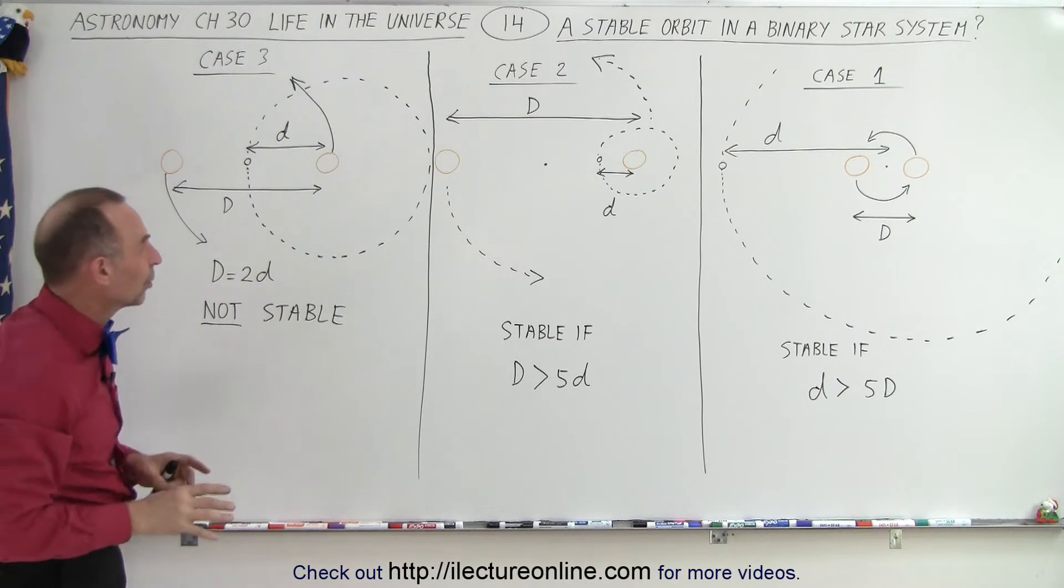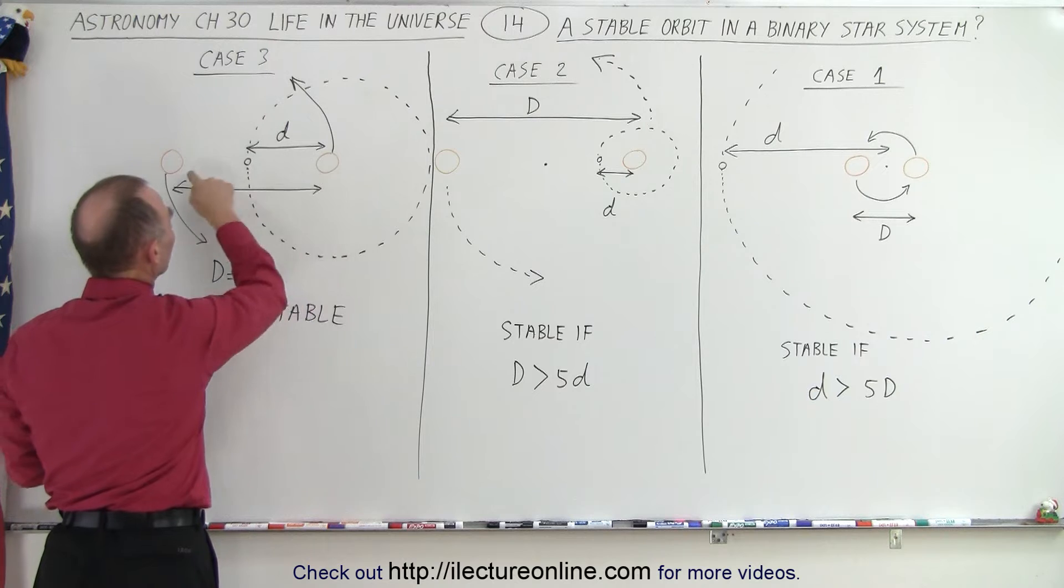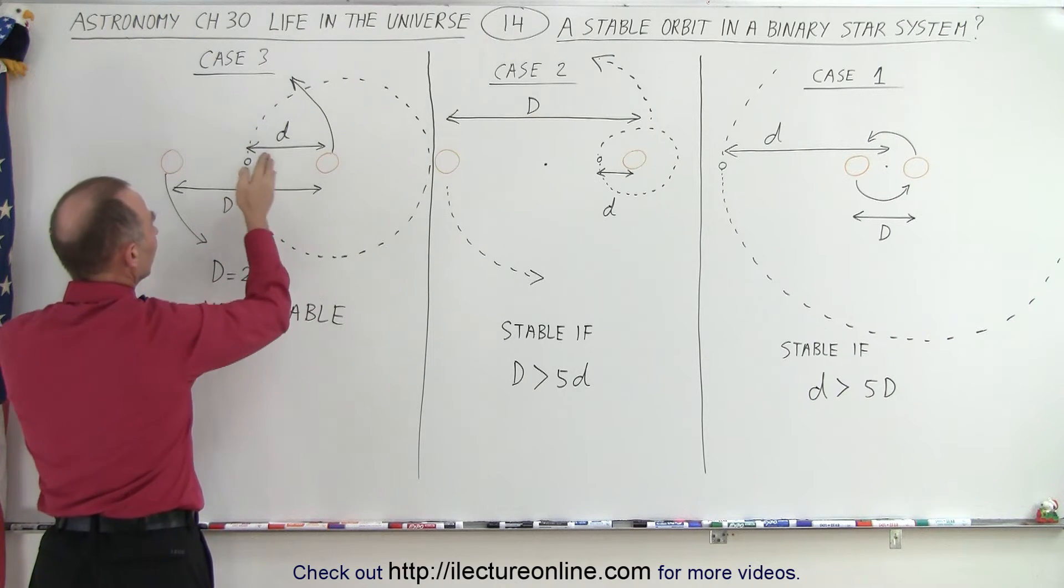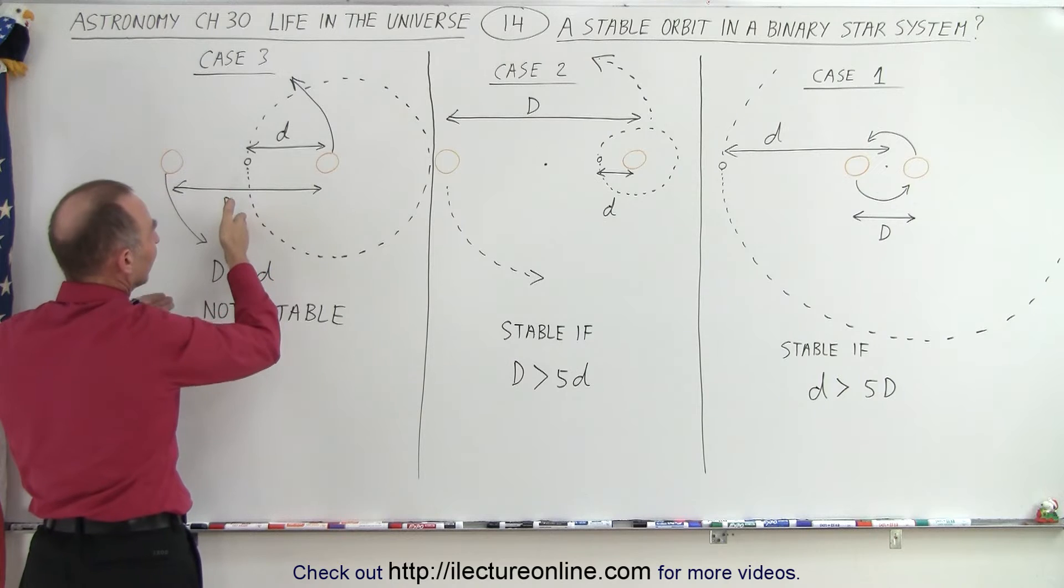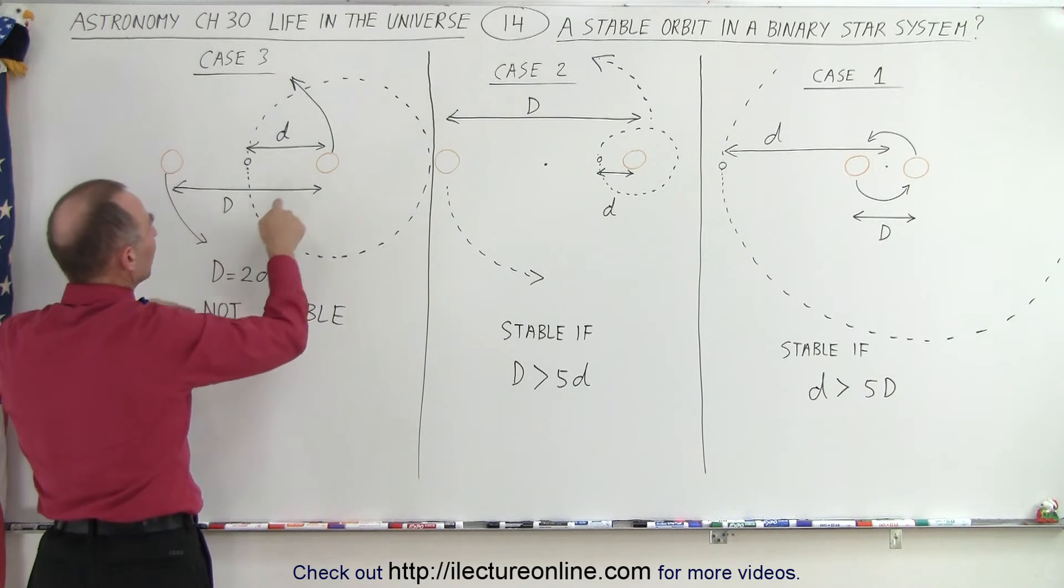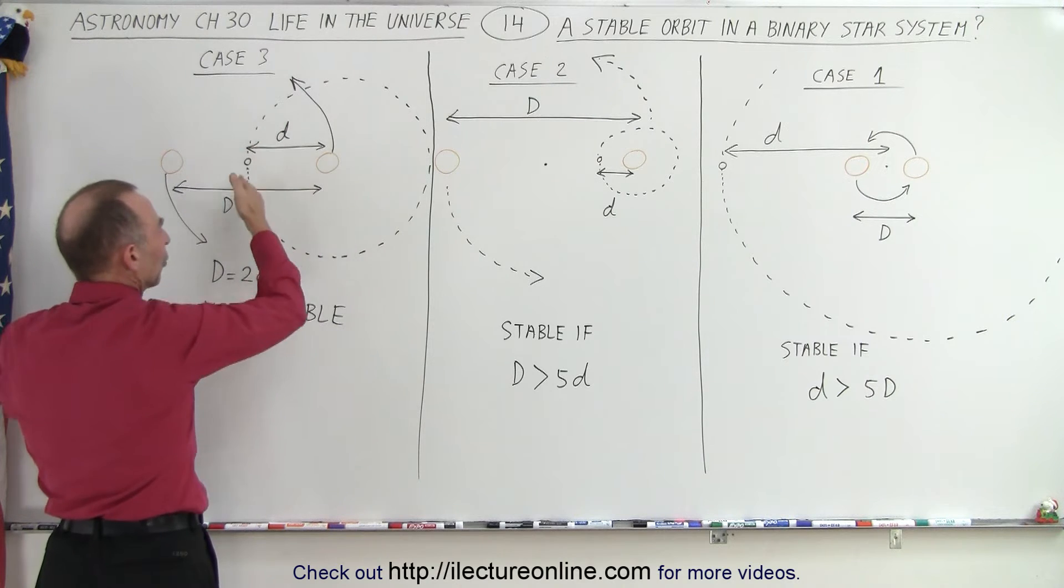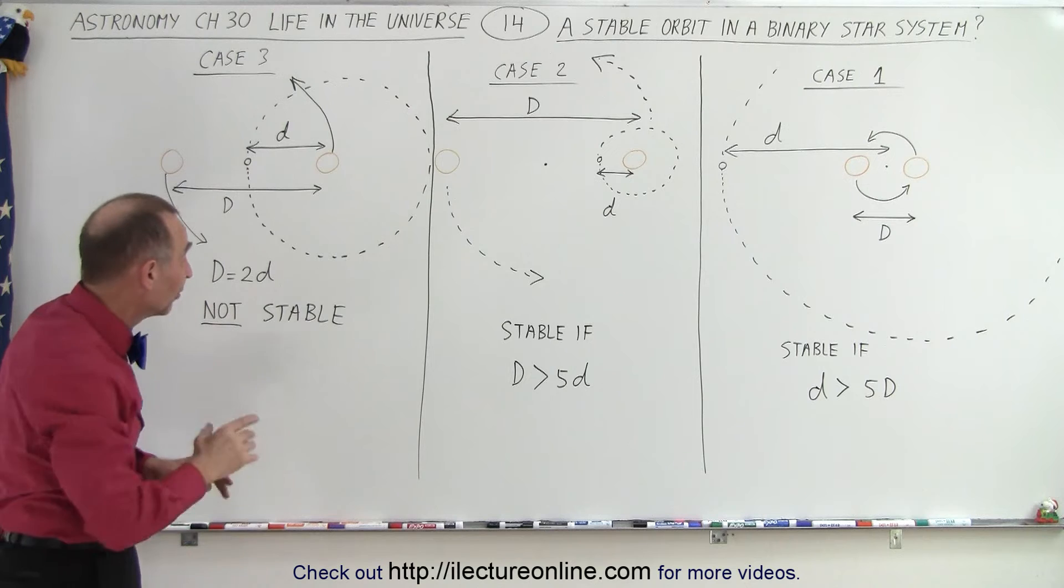That would be a very unstable orbit because here, notice, you'd be pulled in both directions so that the force would then be neutralized, so to speak, and the planet would then go straight. And then, as this planet moves this way, you'd get close to this planet, you'd be far away from that, and your orbit would not be circular, it would have all kinds of erratic patterns.